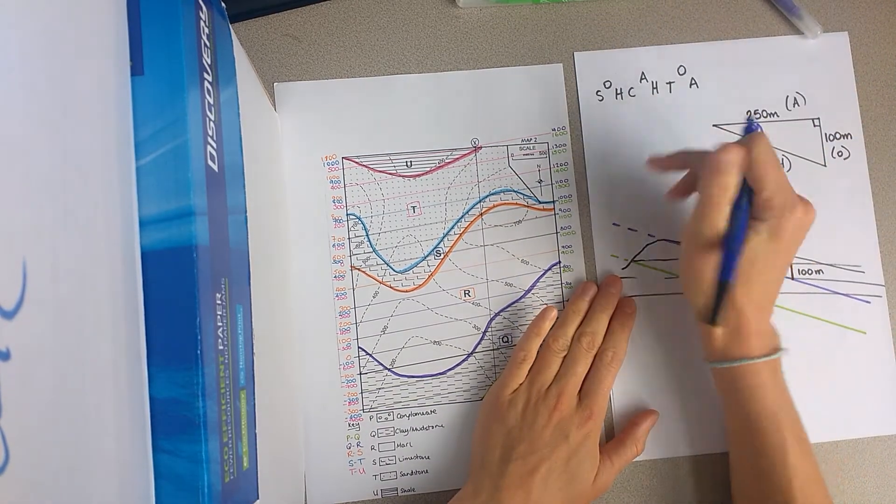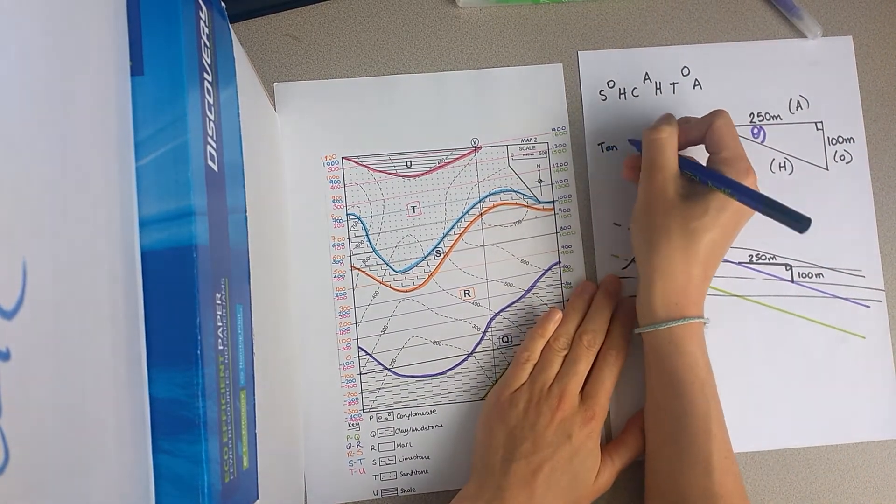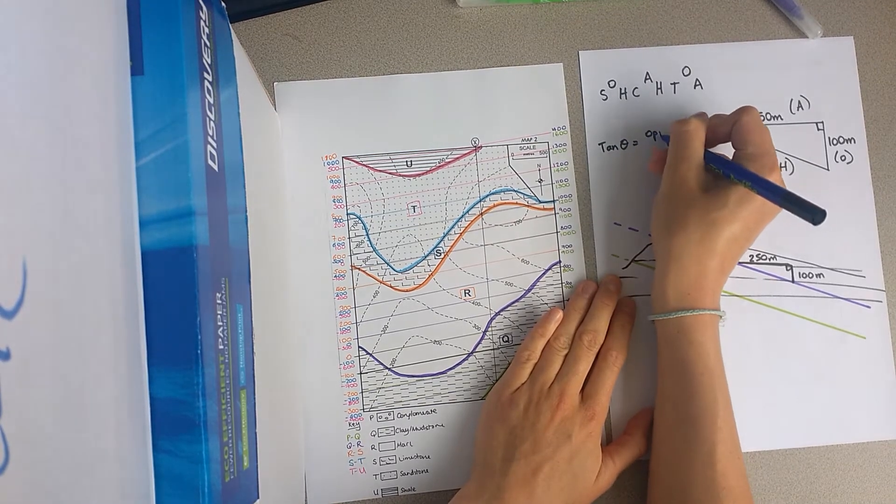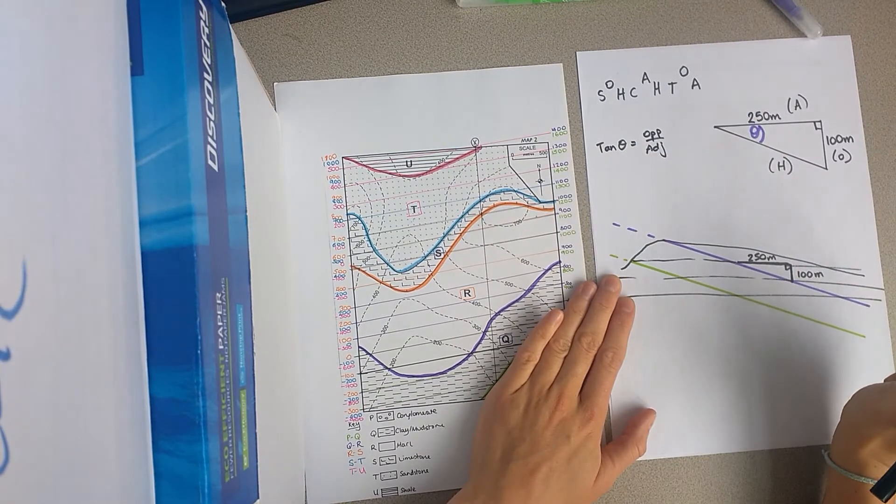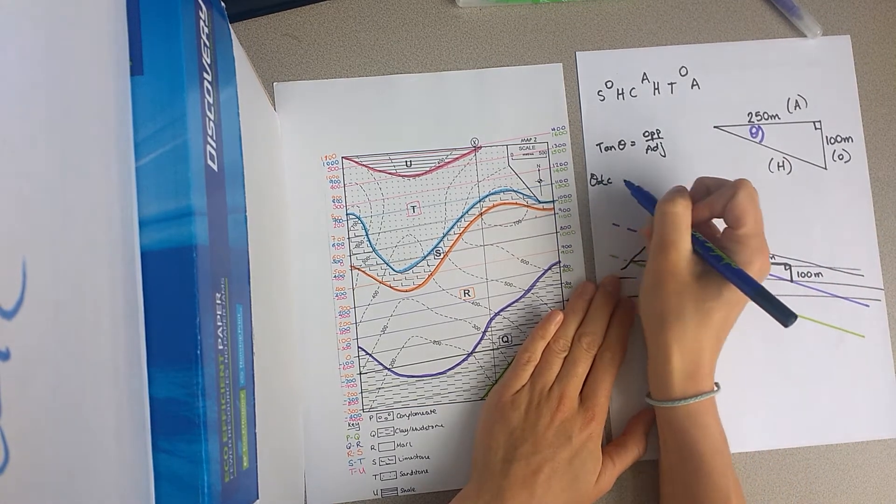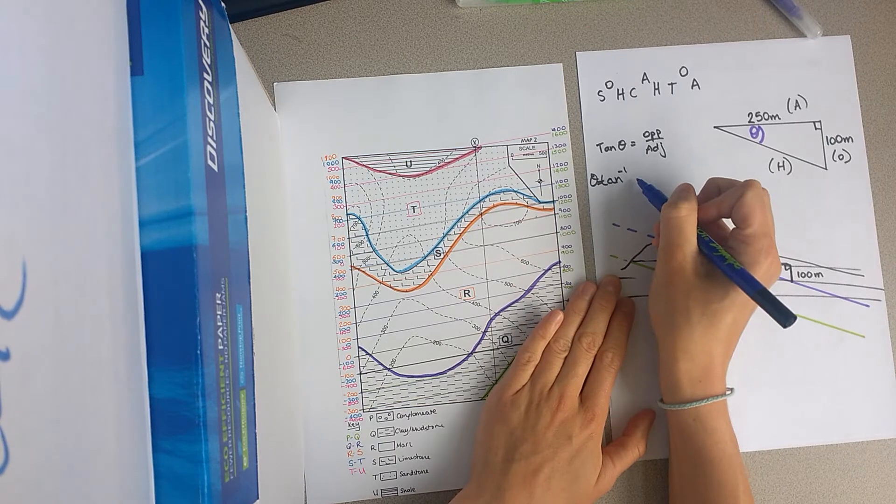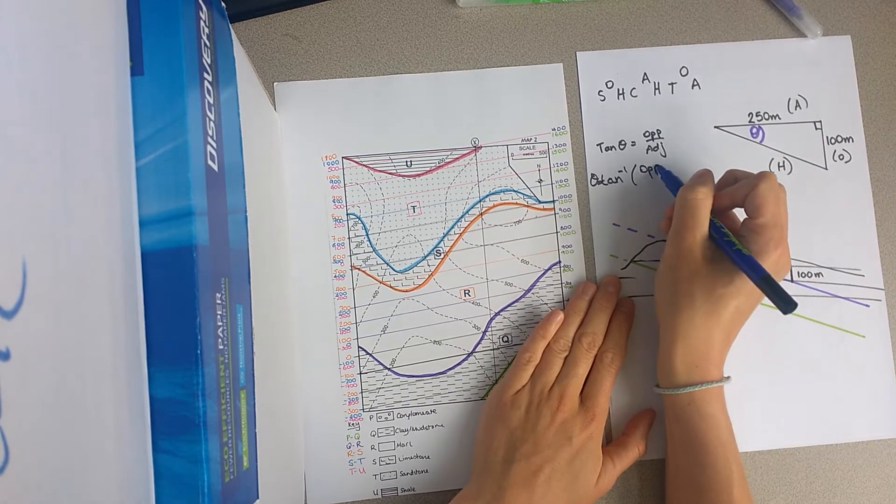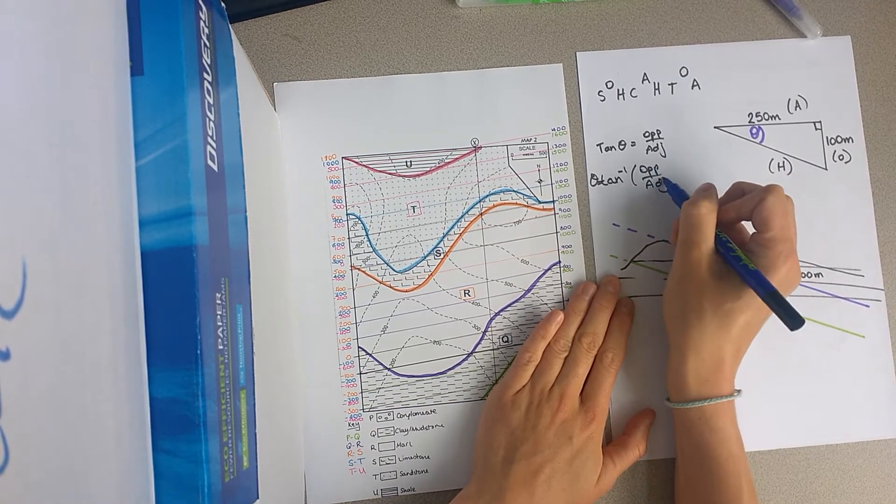So, you can see here, tan would equal opposite over adjacent, okay? So, then the angle would equal inverse tan, opposite over adjacent.